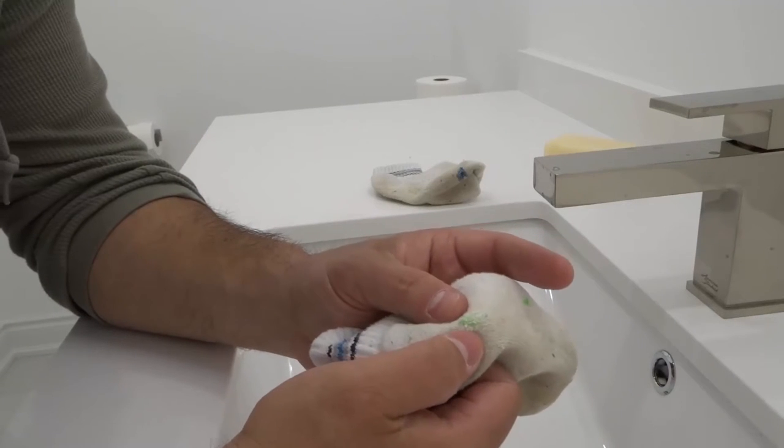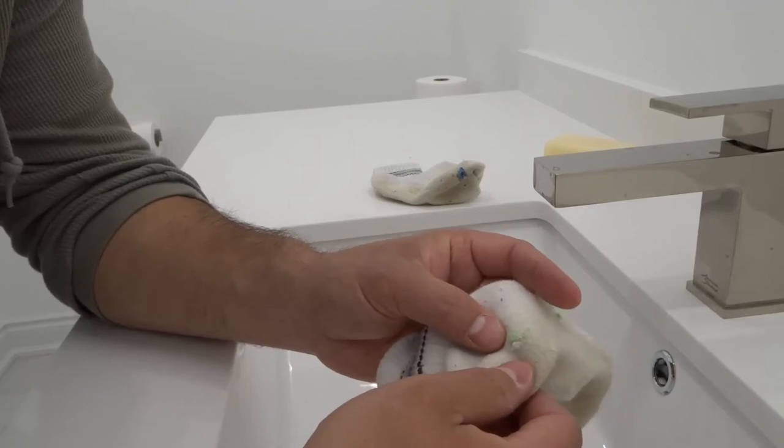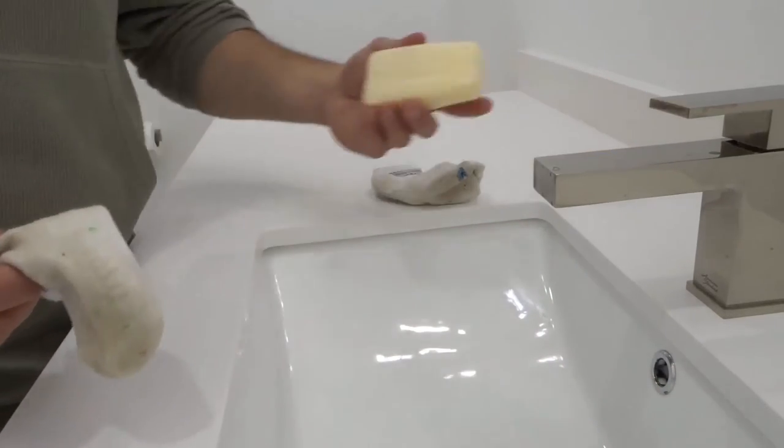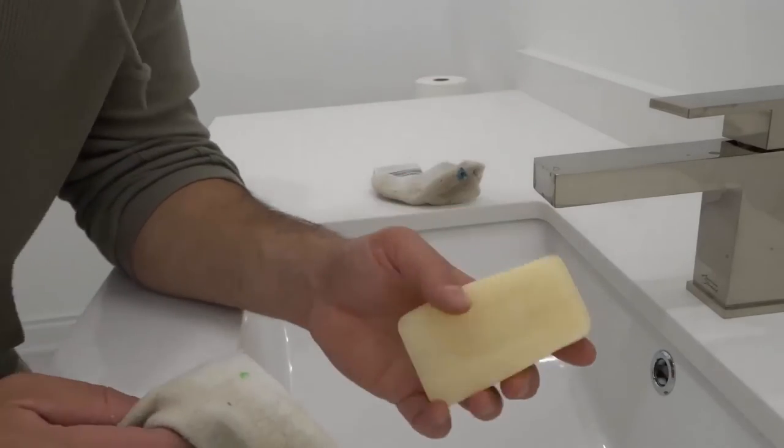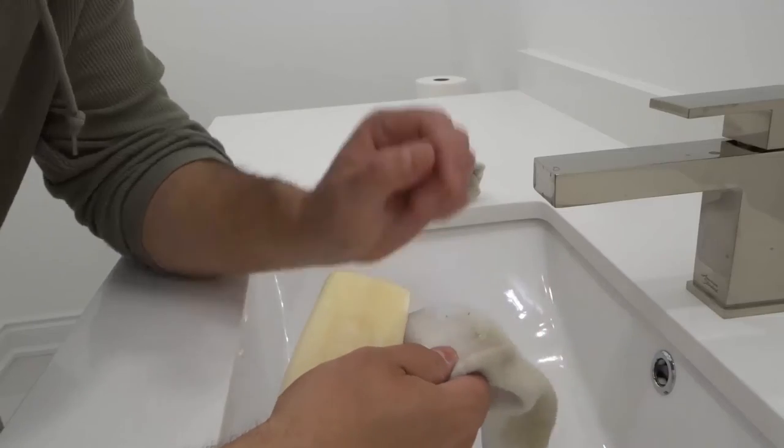Once you're at the point where nothing else is coming off with scraping, then you need to wash it using soap and water. You can use any kind of soap. I like to use this bar—I believe this is Lynda soap. I just use it to clean stubborn things like this that won't come out.